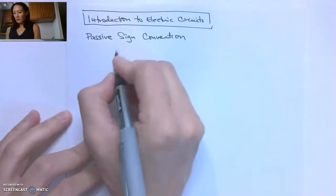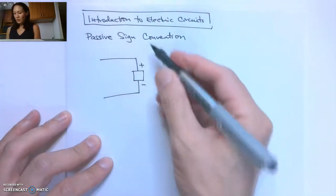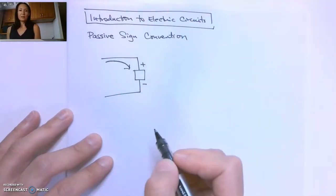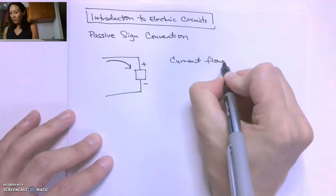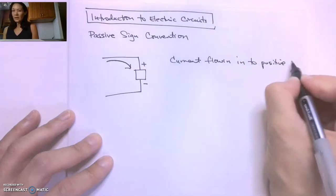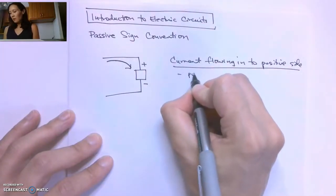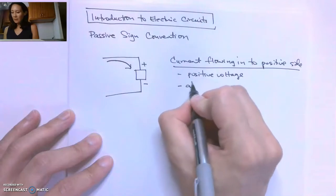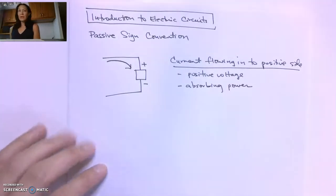So the passive sign convention works like this. Suppose you have some circuit element and the voltage is oriented like this. If the current is flowing into the positive terminal, we consider this to be positive voltage, and we say that this element is absorbing or dissipating power.